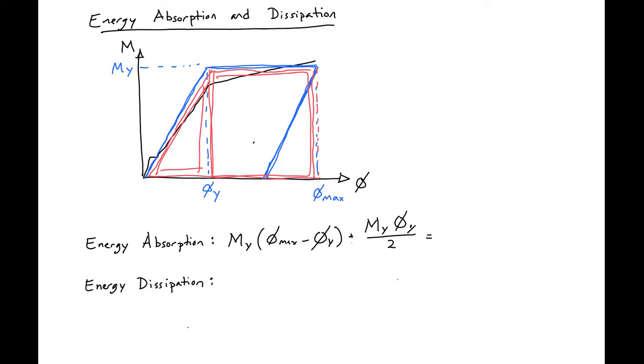So we can simplify this and find it equal to My times phi_y times our curvature ductility minus one half, where our curvature ductility is equal to our phi_max divided by our phi_y.